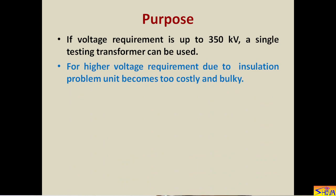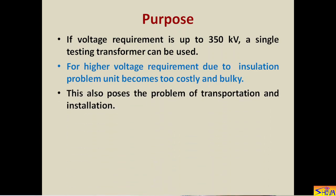For higher voltage requirements, due to insulation problems the unit becomes too costly and bulky, because the cost of insulation is proportional to the square of the voltage. So if we go beyond 350 kV, the cost of insulation becomes too high and the insulation requirement increases, making the unit costly as well as bulky. This also poses problems of transportation and installation because the unit becomes too heavy.